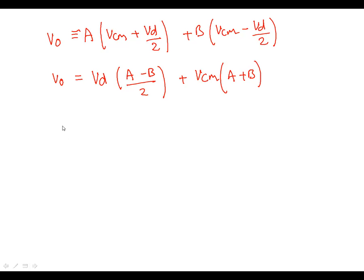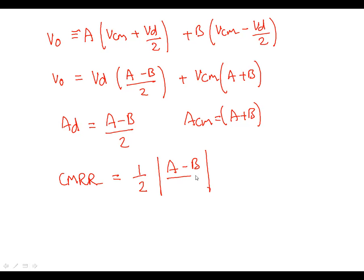And we'd already defined before the AD, the differential mode gain, therefore A minus B over 2, and the common mode voltage ACM would simply be A plus B. If we write those together and put them into the common mode rejection ratio, where common mode rejection ratio is differential mode gain, AD, over common mode gain, what we would get is a half into A minus B, all divided by A plus B.